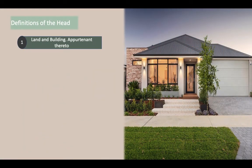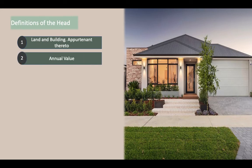The first element is land and building attached thereto. The taxability covers residential houses, bungalows, docks, or warehouses. Any block of bricks or stones covered by a roof is called a building. Land by itself is not taxable under this head — it is taxed under income from other sources. However, if land is not detachable and is attached to the building, then land is also taxable under this head.